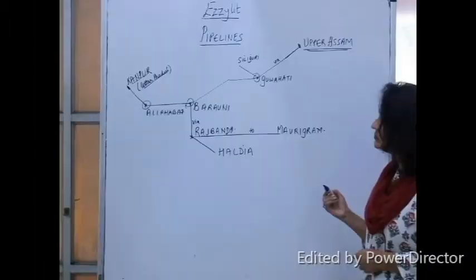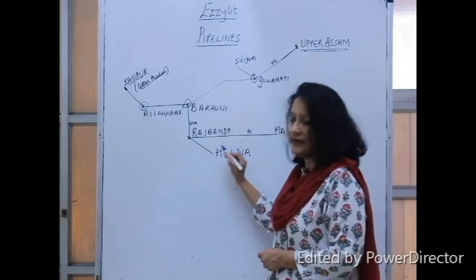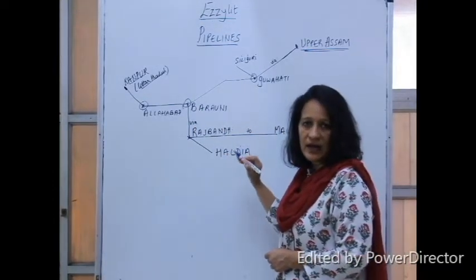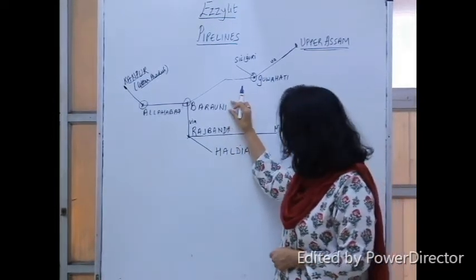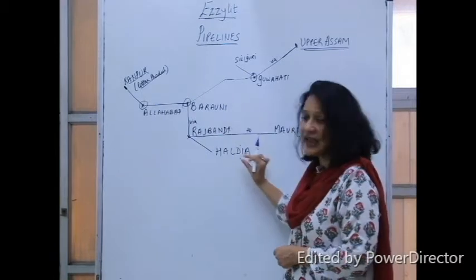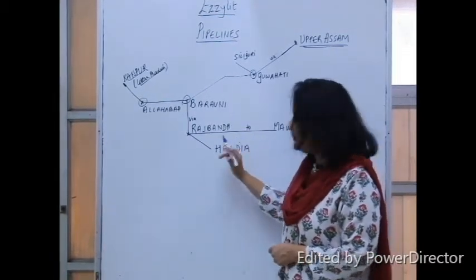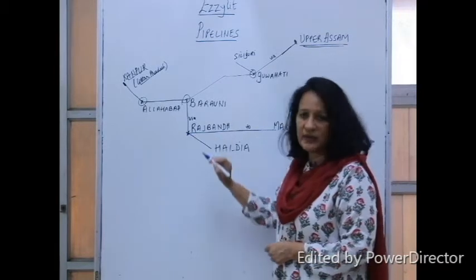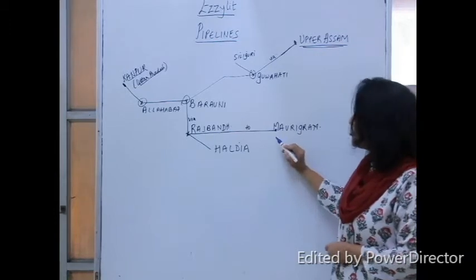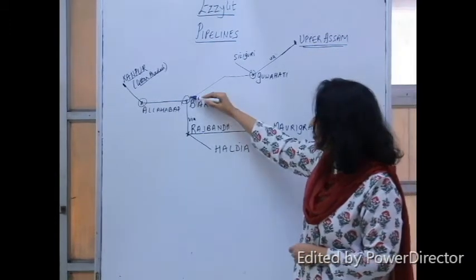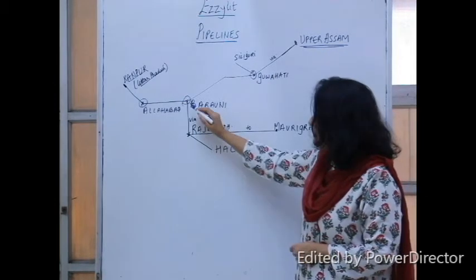Then from Barauni to Haldia. I teach my students to remember two eatables: brownie and haldi. So it's Barauni to Haldia via Rajband, Rajband to Maurigram. So you have from Barauni to Haldia, your eatables, remember that, via Rajband and Rajband to Maurigram.